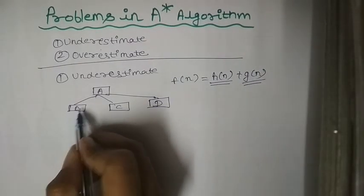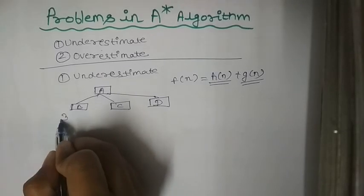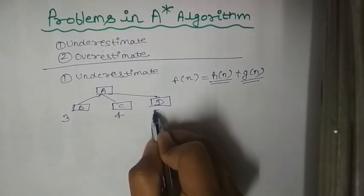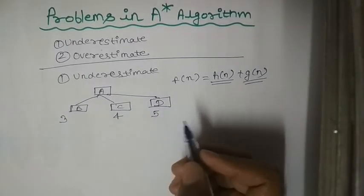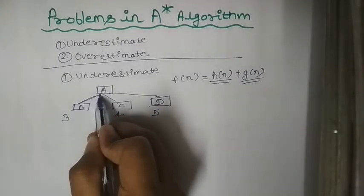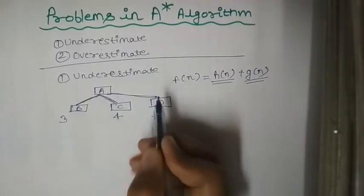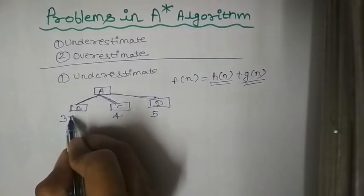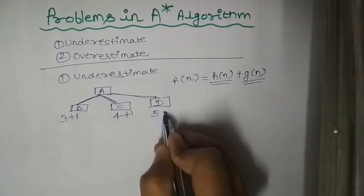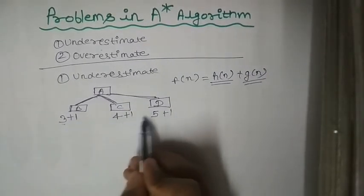Suppose here the heuristic value is 3, here it is 4, and here it is 5. The cost of each edge is 1, so you have to add 1 for each edge. These are all the F(n) values.